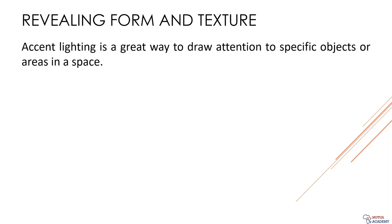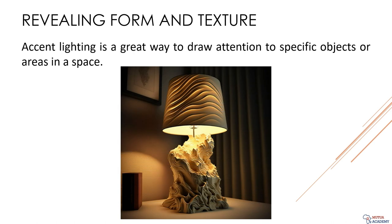If you want to make your space stand out, you need to know about the magic of accent lighting. Accent lighting is like the spotlight of the lighting world — it's all about drawing attention to specific areas and objects. Whether it's a funky piece of furniture or a jaw-dropping sculpture, accent lighting can help make it the star of the show. By using accent lighting to illuminate these areas, you can create a focal point that will leave your guests dazzled. A simple table lamp can work wonders — by placing it strategically near a textured sculpture, you can make the sculpture look like a masterpiece.